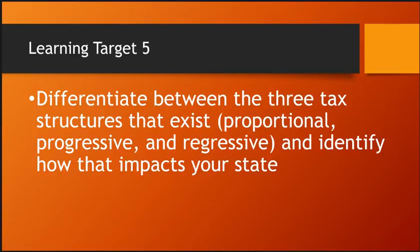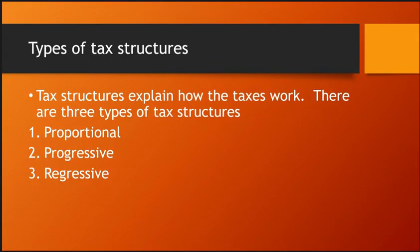Learning target five: differentiate between the three tax structures — proportional, progressive, and regressive. A proportional tax, commonly called a flat tax, means everybody pays the same percentage. For example, at 10%: if you made $1,000, you'd pay $100 in taxes, and if I made $100,000, I'd pay $10,000. We each pay the same percentage, but I clearly paid a lot more in total dollars.